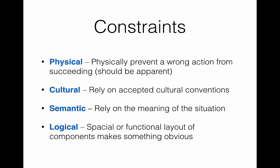Physical constraints prevent you from doing the wrong action. For example, the gate on the ground floor of staircases that was shown in a previous slide prevents people who are running for the exit from mistakenly going down to the basement. Let's define the other constraints and look at examples in the next slide.